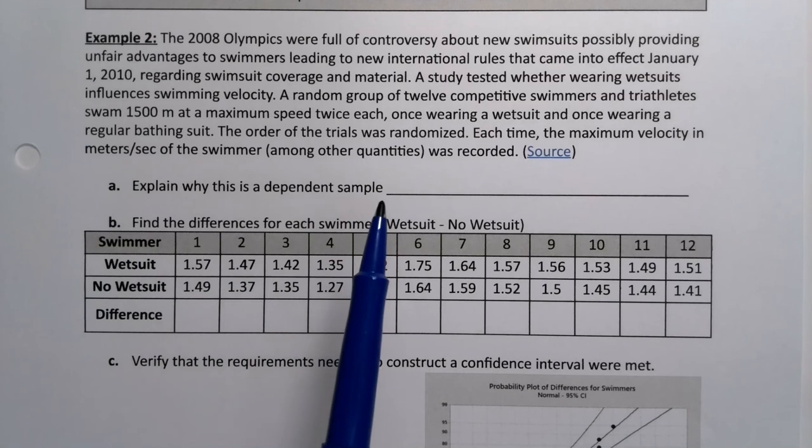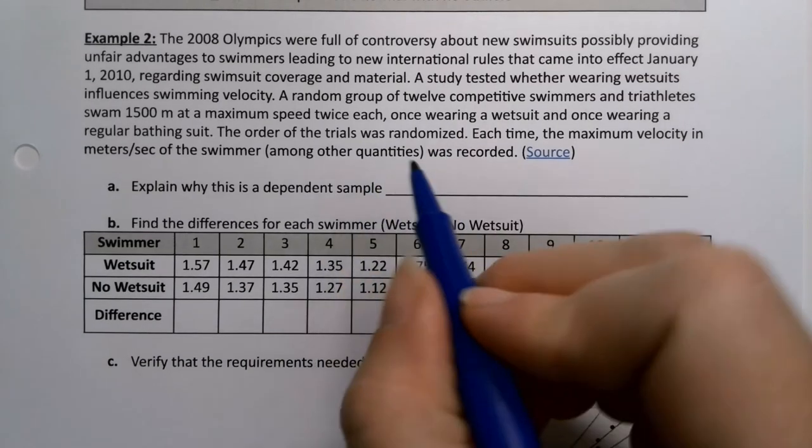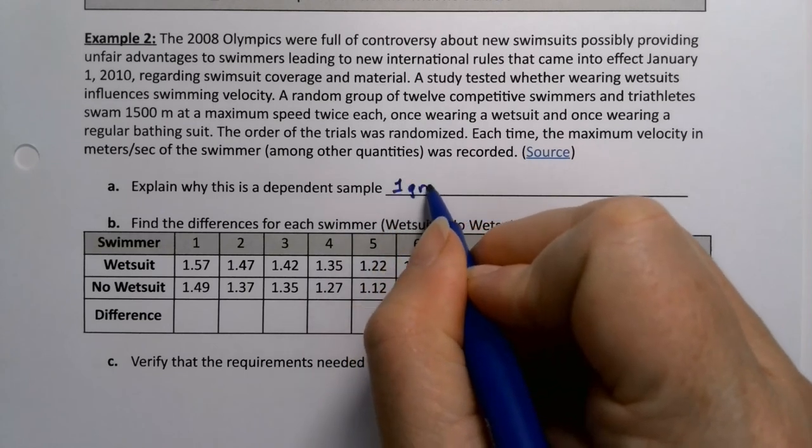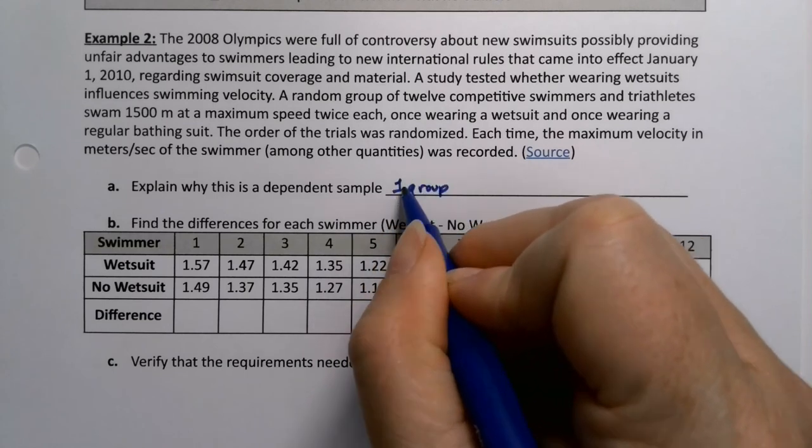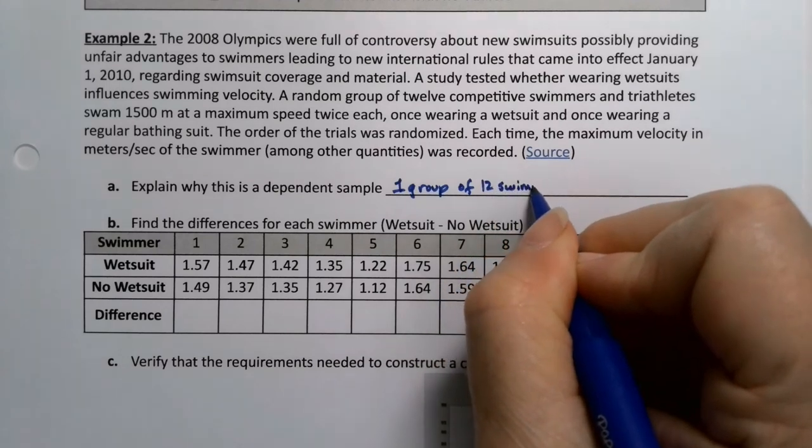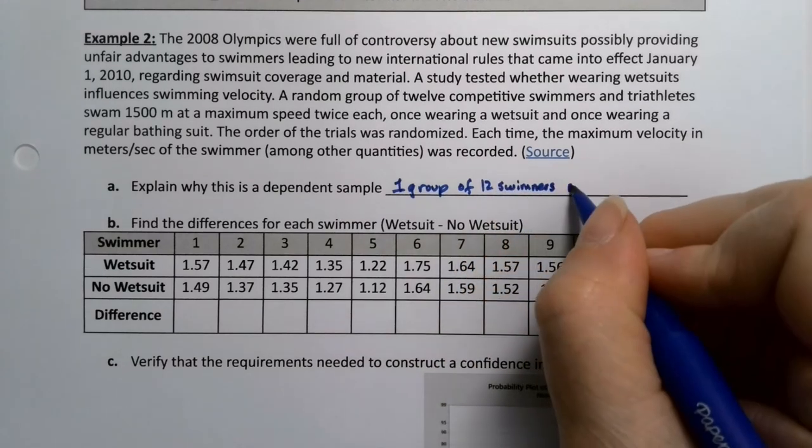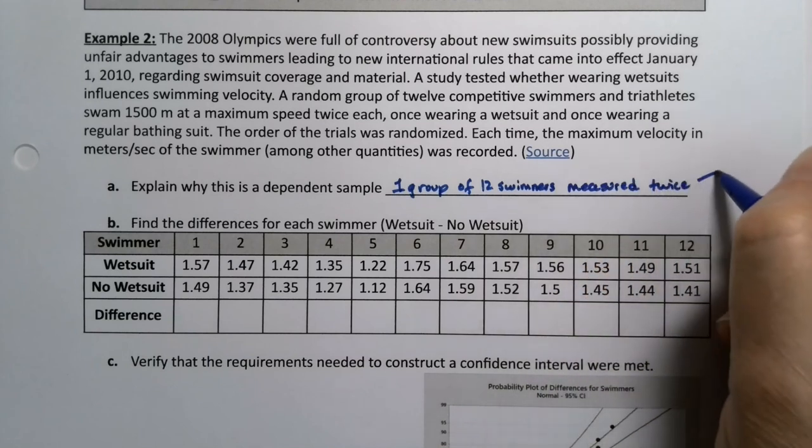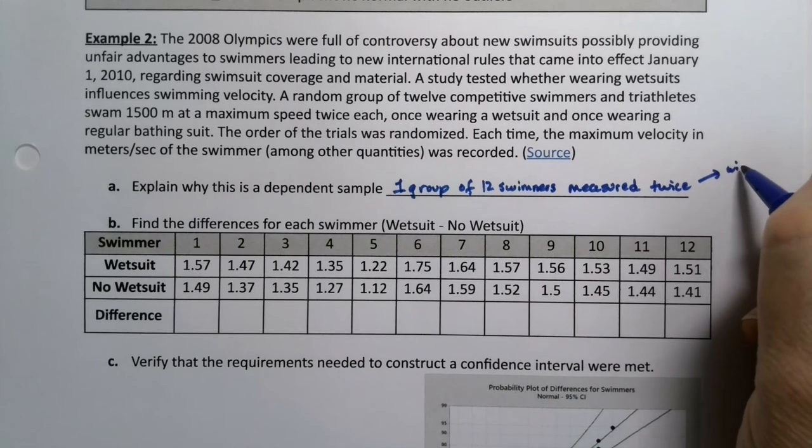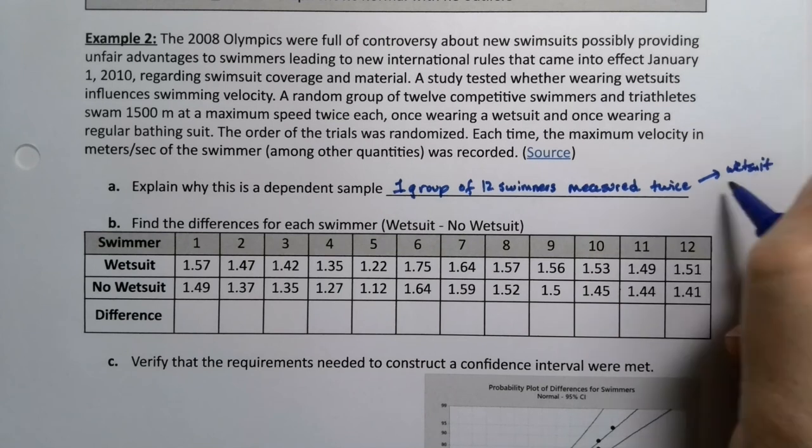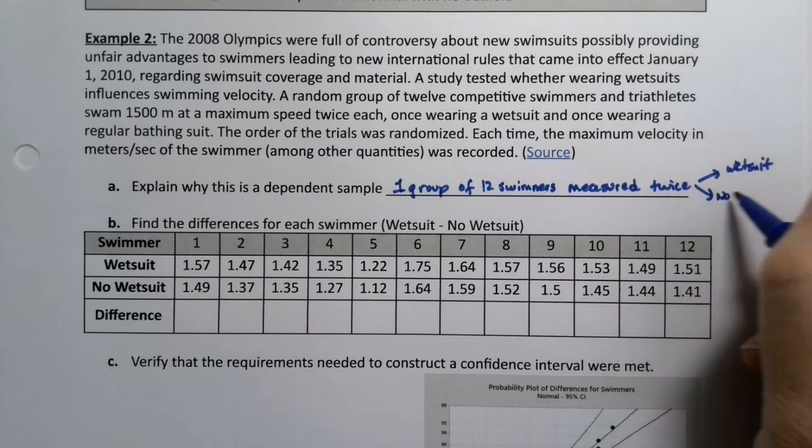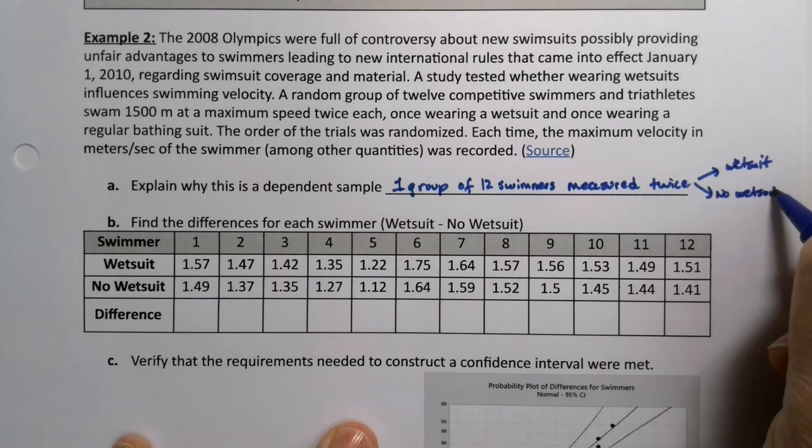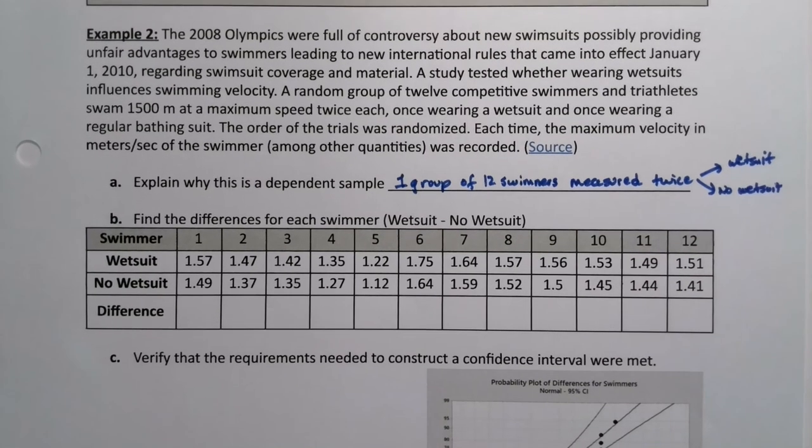Explain why this is a dependent sample. Well, it's pretty obvious, right? It's one group of 12 swimmers measured twice, measured once with the wetsuit and once without. I'll just say wetsuit and no wetsuit.